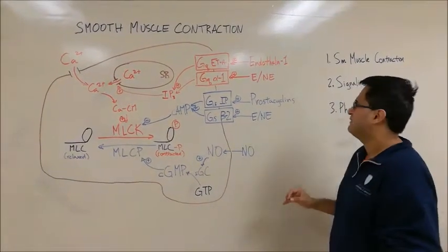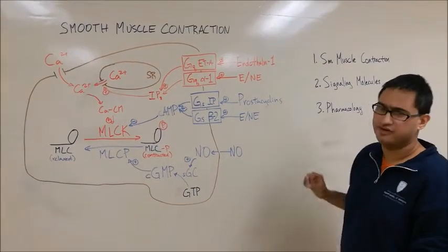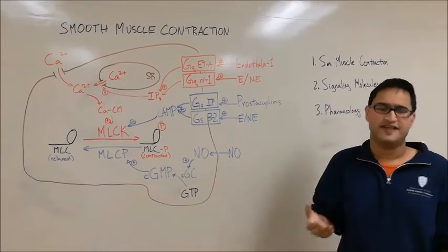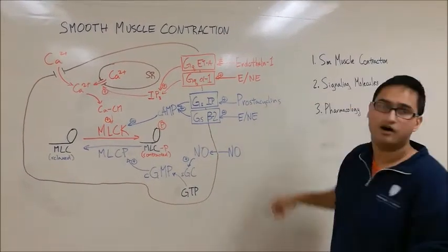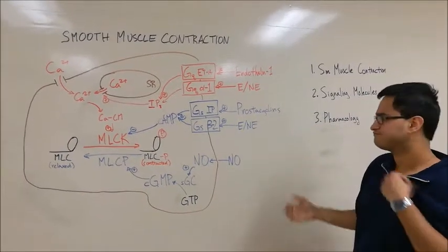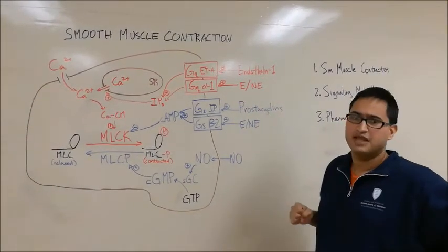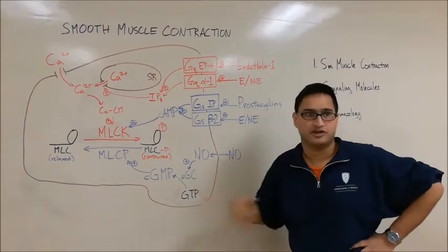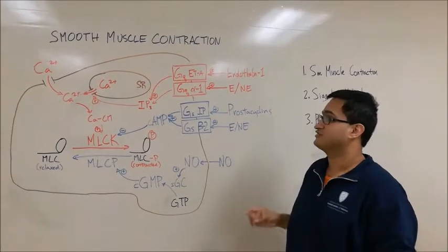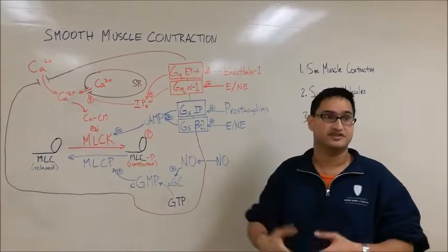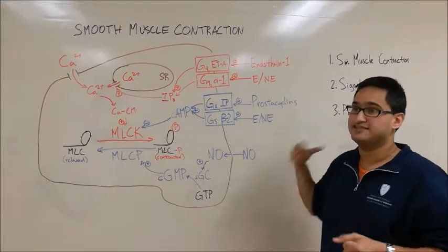I want to note that endothelin-1, prostacyclins, and nitric oxide are all produced by endothelial cells in a paracrine fashion, whereas epinephrine and norepinephrine are not — they can be released as neurotransmitters or through the adrenal glands. Also, the reason these molecules can have antagonistic effects is that their receptors are often found in different places. In blood vessels supplying skeletal and cardiac muscle you might find more beta-2 receptors, whereas in GI tract vessels it might be more alpha-1, relating to the fight-or-flight response.